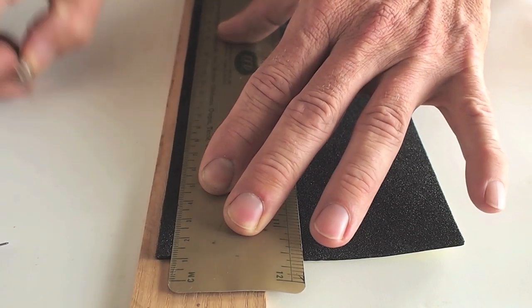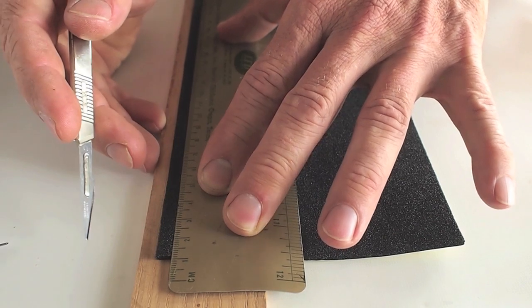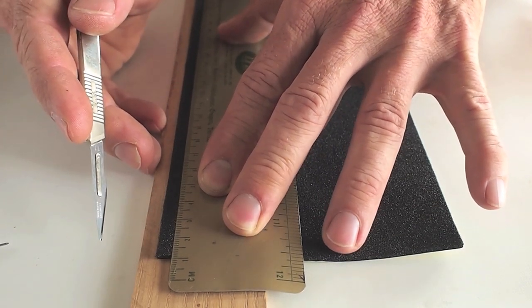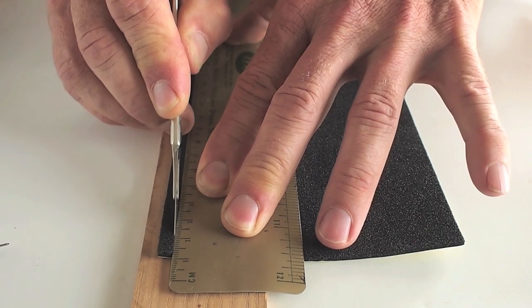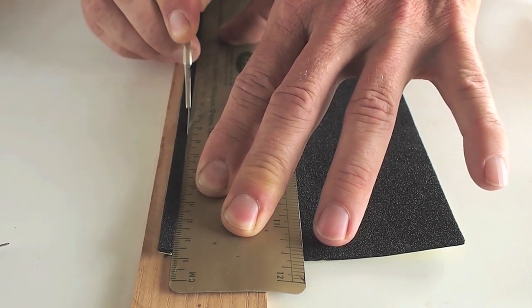Place the foam on a cutting surface, align your straight edge. With moderate pressure, draw down against the straight edge to cut the foam cleanly.